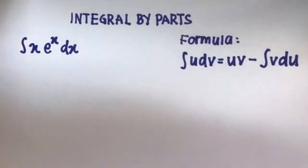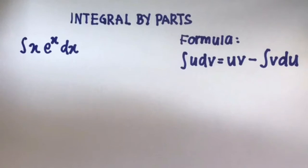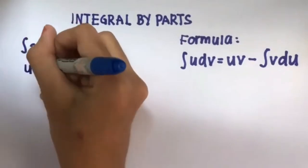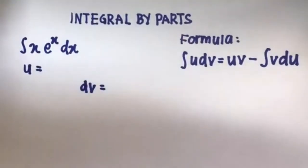This is the integration by parts formula. All it does is take your integral and rewrite it using a new, different integral — and hopefully the new integral is easier to do, something we can integrate. First, you have to choose what U and what DV are yourself, and carefully, in order for it to work.